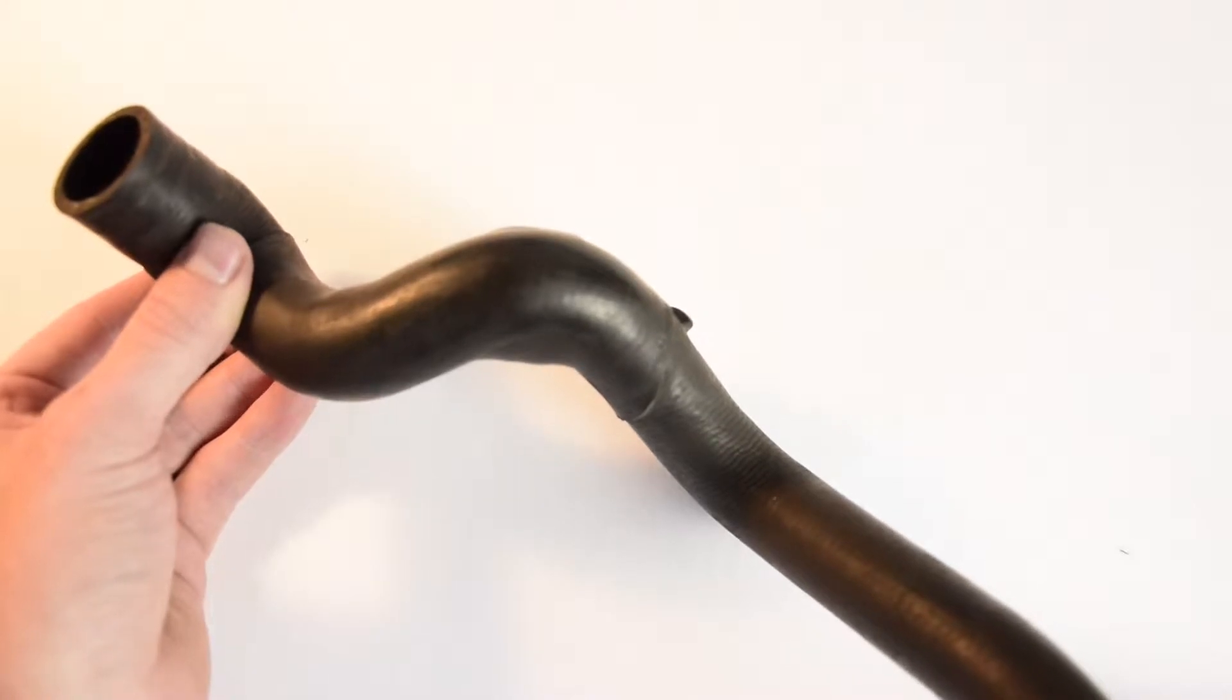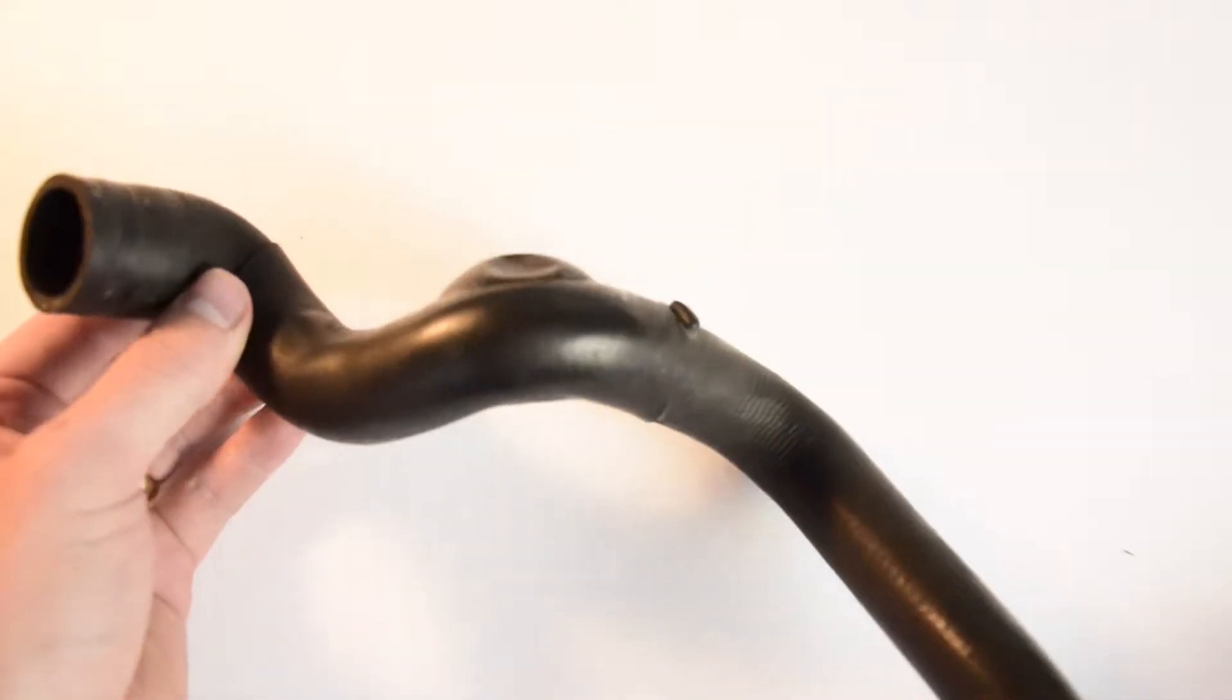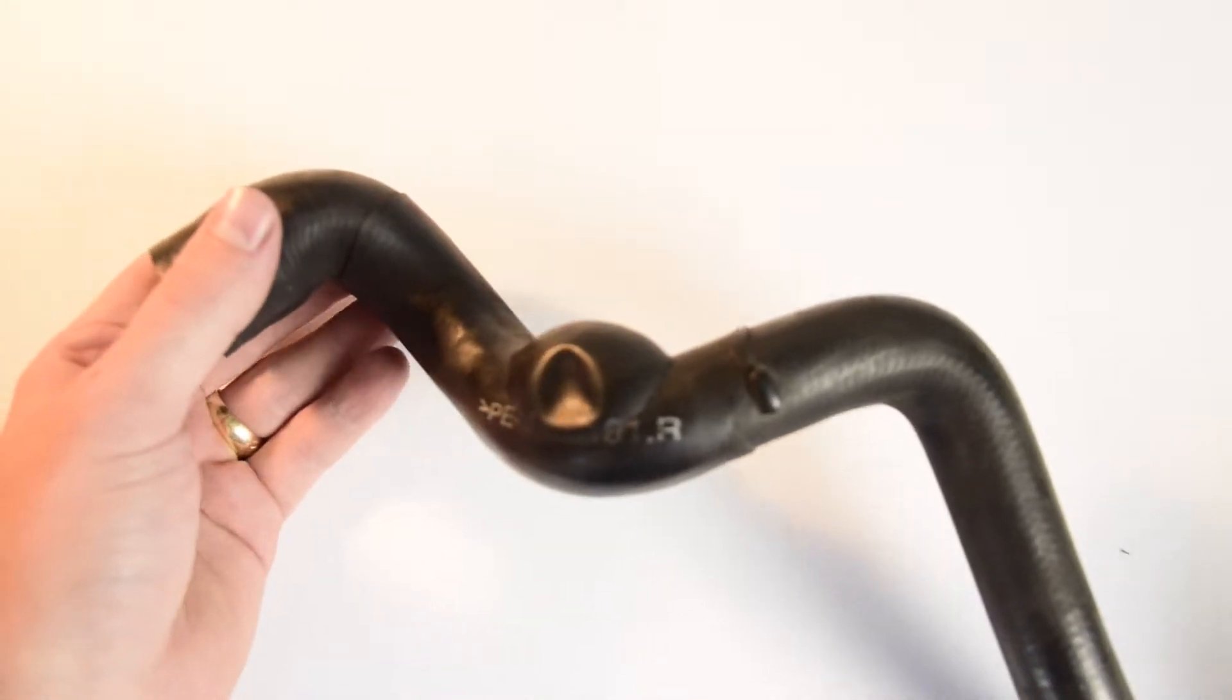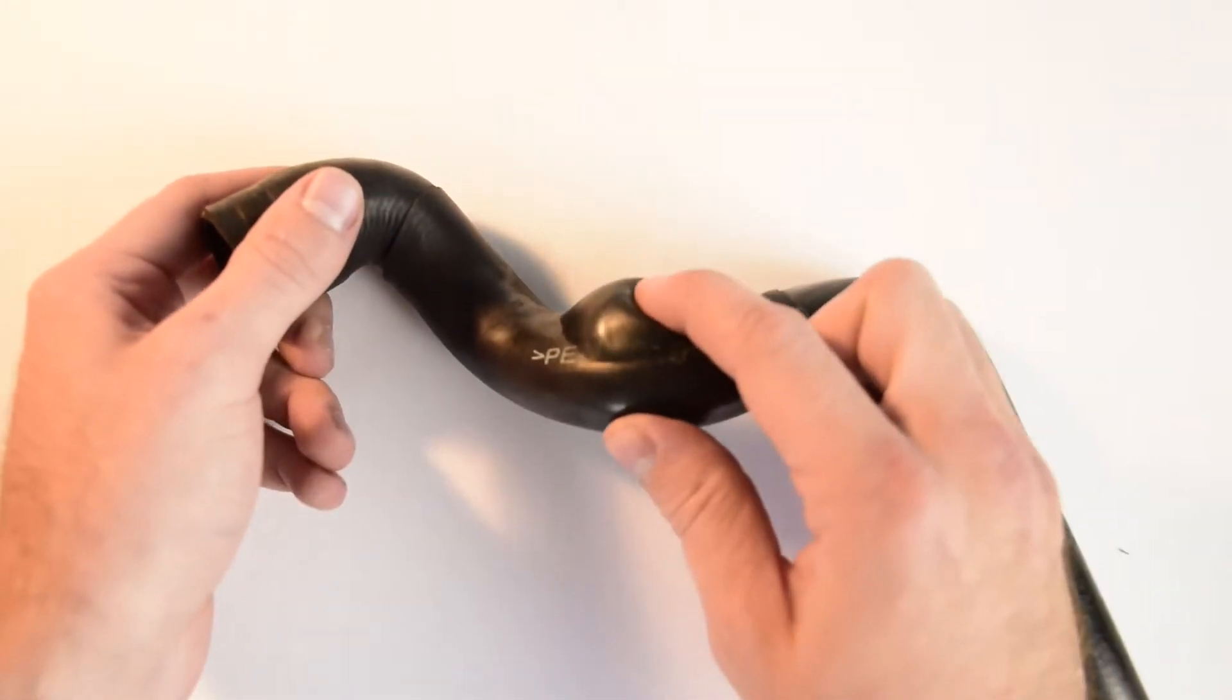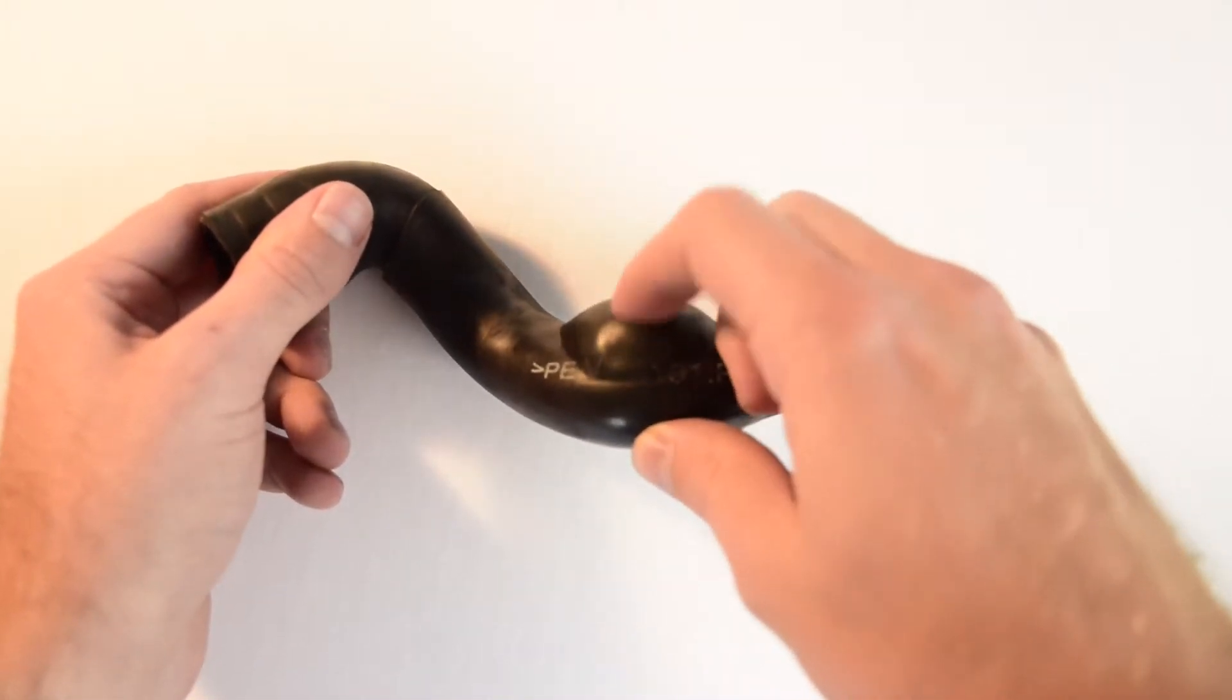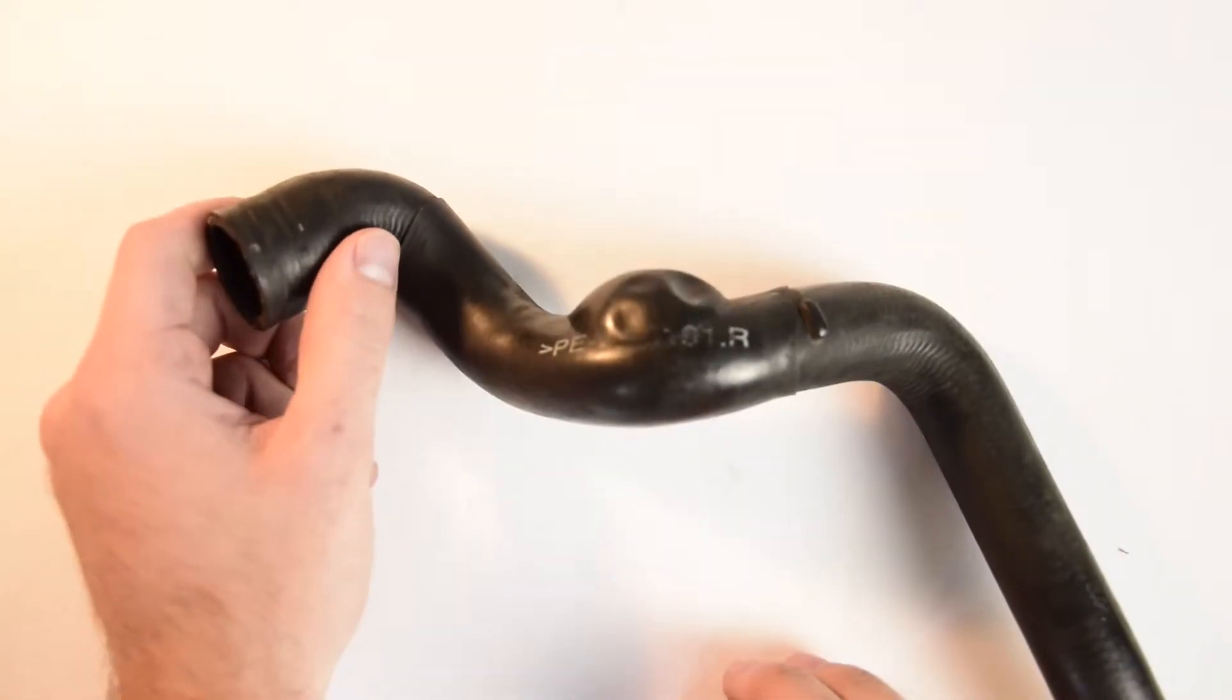Now you can't really see it in this angle so I'm going to flip it and let me know if you can see where the problem is. Yeah, that's right, there is a nasty bubble here in the hose and that was causing it to leak out.